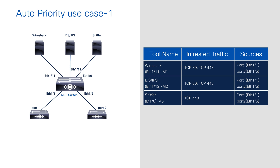Here is the first use case. As you see in the topology, I have an NDB switch with two ingress ports — port 1 and port 2 — receiving traffic via SPAN. I have three tools: Wireshark, IDS, and IPS, connected to ports Ethernet 1/11, Ethernet 1/12, and Ethernet 1/6 respectively. The first tool, Wireshark called M1, needs HTTP port 80 and port 443 traffic, with sources Ethernet 1/1 and 1/5.